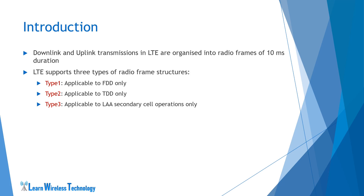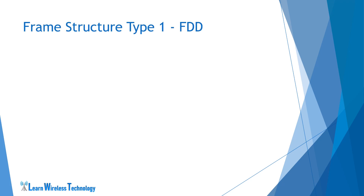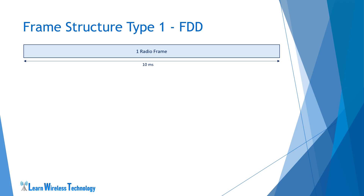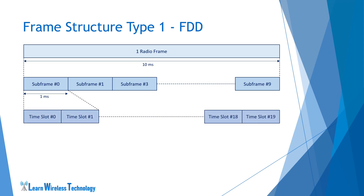Type 1 frame structure is applicable to FDD, i.e. Frequency Division Duplex mode only. One radio frame is 10 milliseconds duration long. Each radio frame is divided into 10 subframes where each subframe has 1 millisecond long duration. The subframes are numbered from 0 to 9. Each subframe is further divided into 2 time slots where each time slot is 0.5 millisecond duration long, giving a total of 20 time slots in a single radio frame.